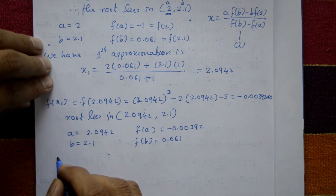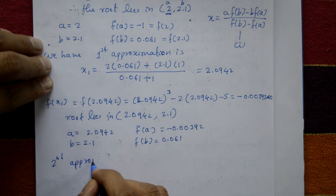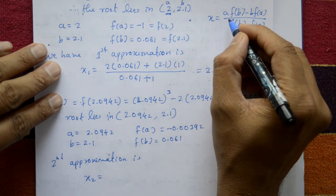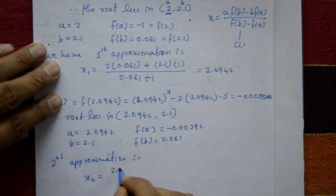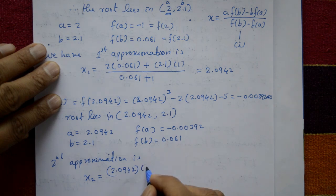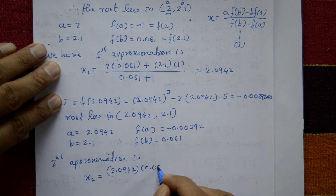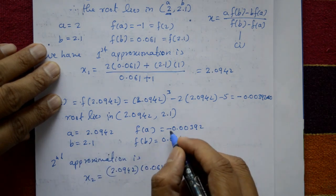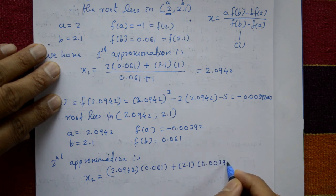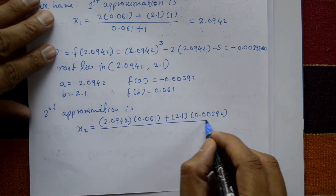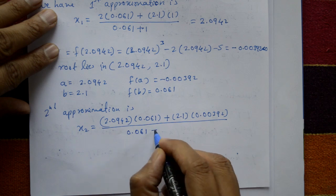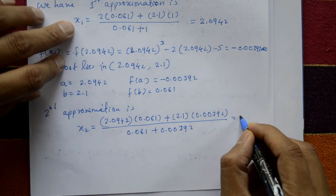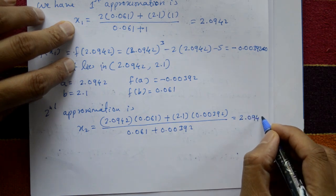The second approximation is x2 equal to 2.0942 into 0.061 minus 2.1 into (plus 0.00392), divided by 0.061 plus 0.00392. Using a calculator, we get x2 equal to 2.09455.